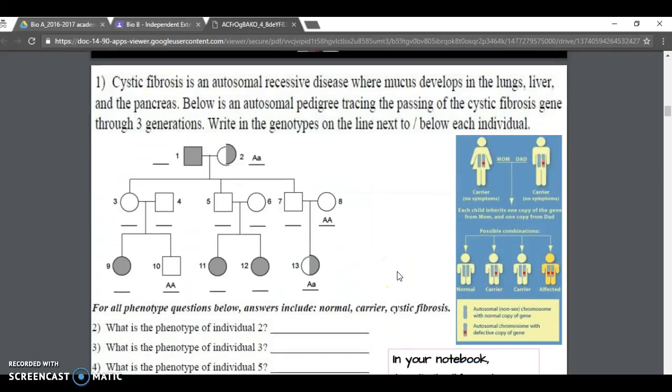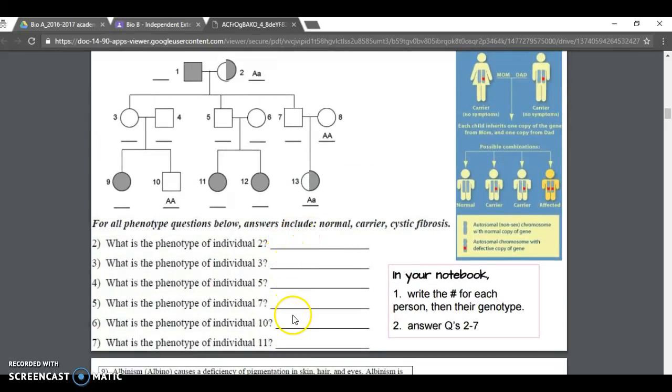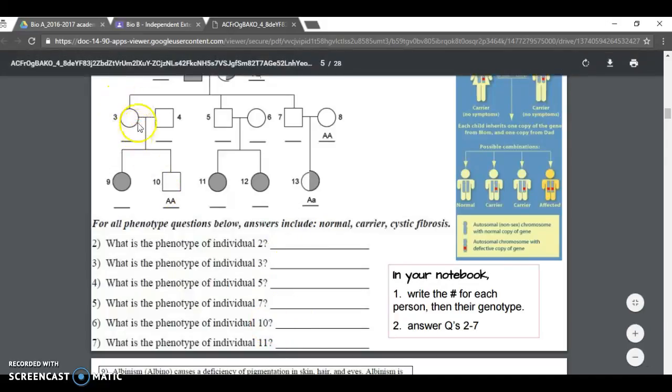The father would be a carrier then, and this would be half shaded in as a carrier, just like this first person here which in this situation would be a grandma. Your job is to do the same for person five, person six, person seven. Make sure you fill in the blanks for these people afflicted with cystic fibrosis.